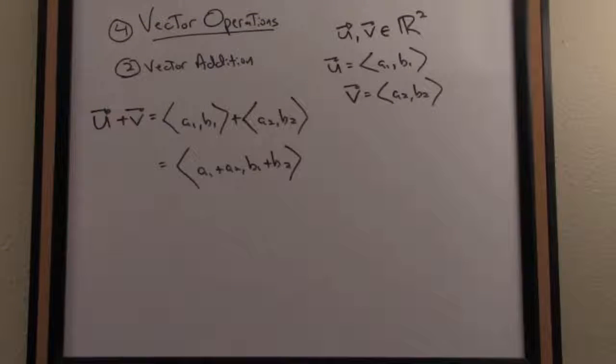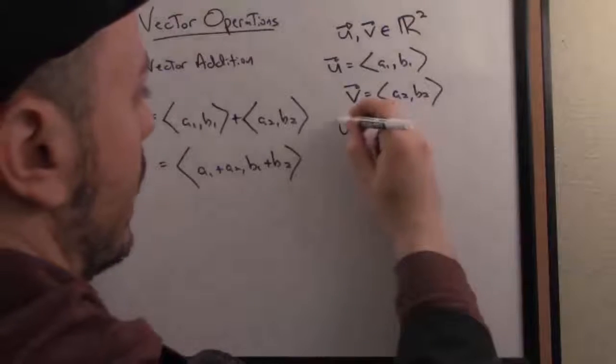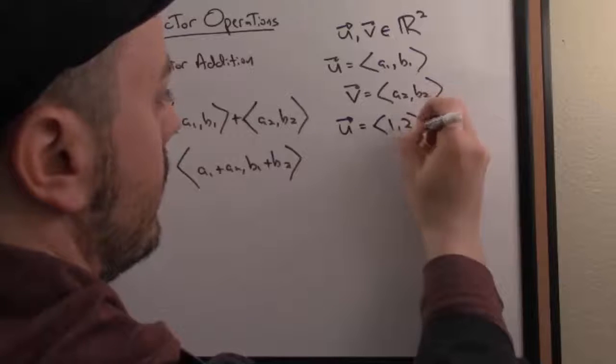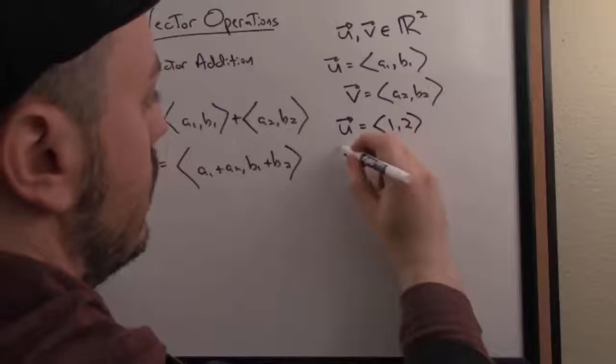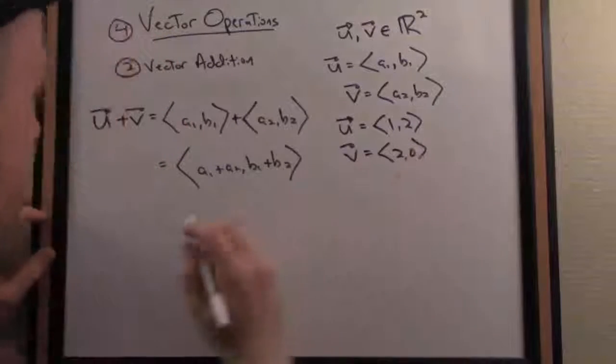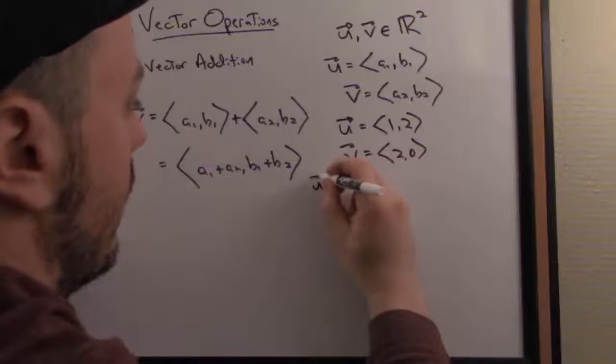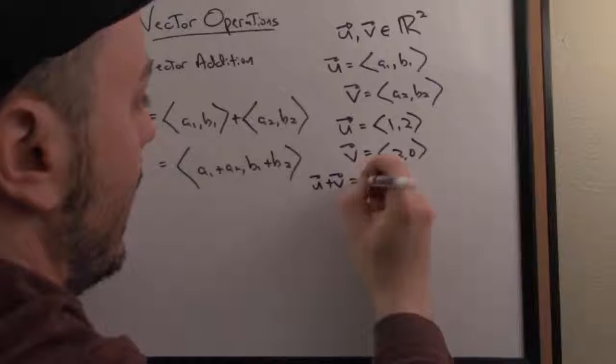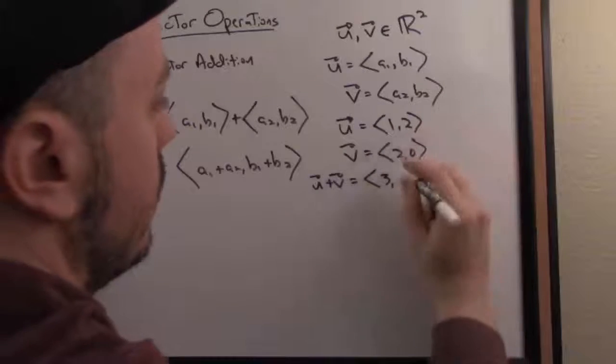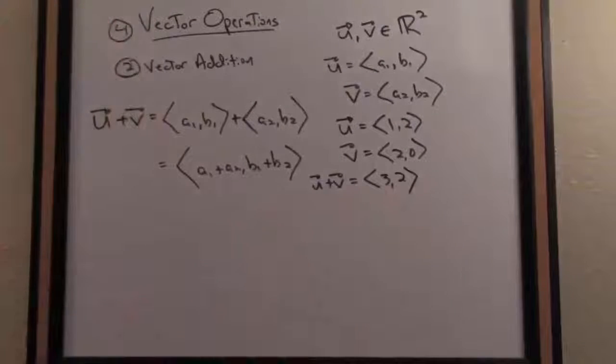Let's see a quick example with some numbers just to make that nice and clear. If we have the vector u, let's call it <1, 2>, and the vector v, let's call it <2, 0>, and I want to add these two vectors together, I add them component-wise. So I got 1 plus 2 is 3, 2 plus 0 is 2. There is my resultant vector u plus v.